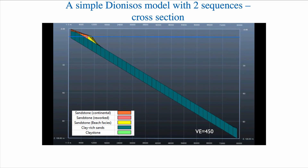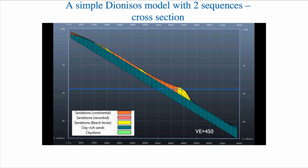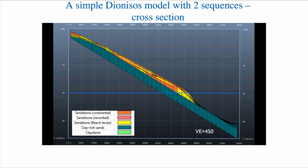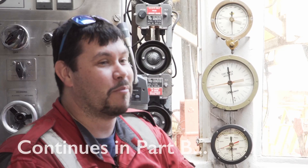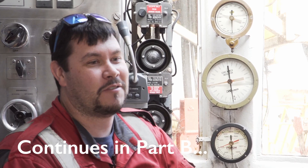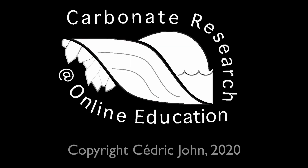We start again with this ramp situation. The blue line represents sea level. Notice the yellow facies — that's the beach deposit. In the back we have the orange facies, that's the continental deposit. See how this yellow facies follows sea level, because it represents deposition essentially at wave base.